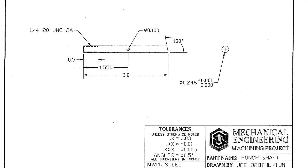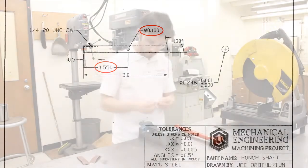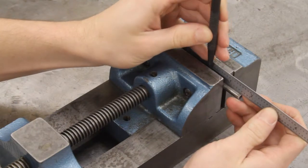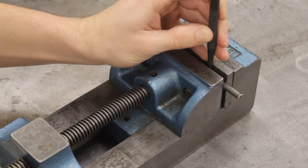Next, the part print calls for a 100 thousandths diameter hole, 1.550 inches from the threaded end of the shaft. Clamp the part into a small vise. Use a ruler and center punch to mark the location of the hole.